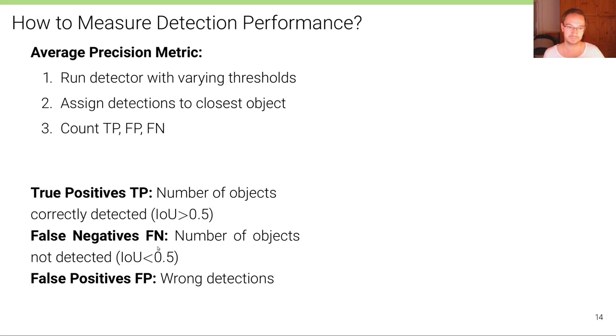The false negatives is the number of objects that are not detected, where the intersection over union is smaller than 0.5. And the false positives are the wrong detections. These are the remaining detections that are not assigned to any ground truth objects, because either they are redundant or they are in an area of the image where there's actually no ground truth label, there is no object there.